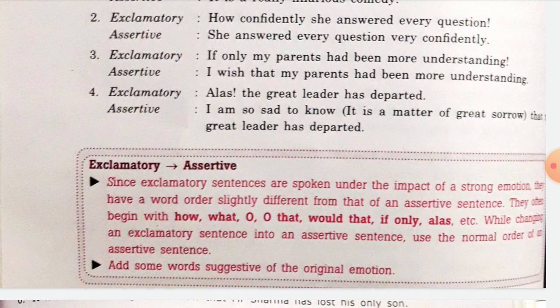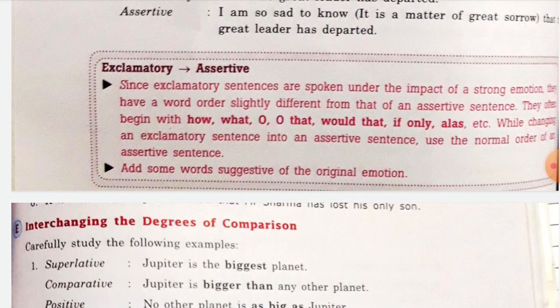Exclamatory sentences are spoken under the impact of a strong emotion. They have a word order slightly different from assertive sentences. They often begin with 'how', 'what', 'oh', 'alas', 'would that', 'if only'. While changing an exclamatory sentence into an assertive sentence, use the normal order of an assertive sentence and add some words suggestive of the original emotion.